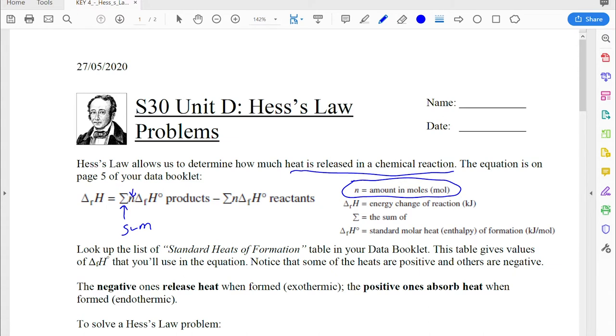And we're going to multiply that by delta FH0. Again, there's a pretty weird looking symbol there, but those values, the delta FH0s, are these energies associated with each of the different compounds on page five of your data booklet. So all these numbers here that you're seeing on this list, on the far right-hand column, are those delta FH0 values.